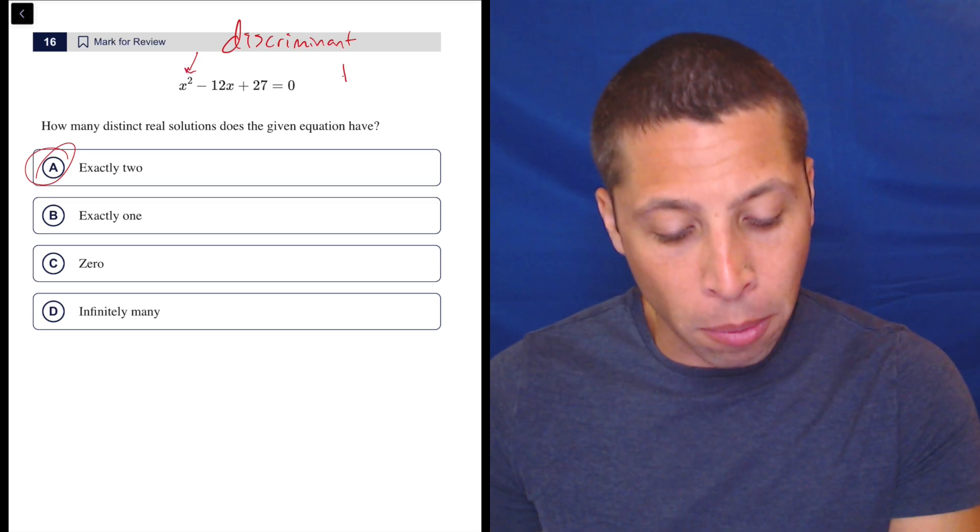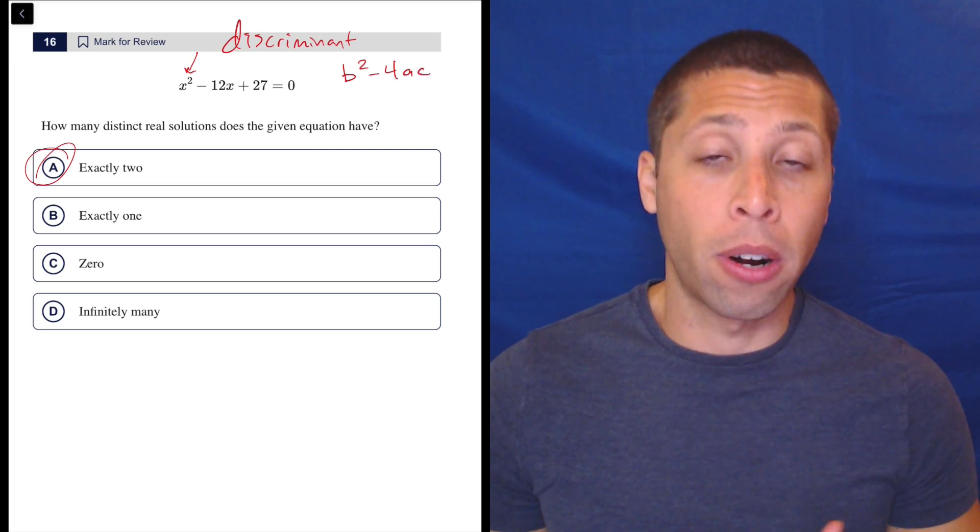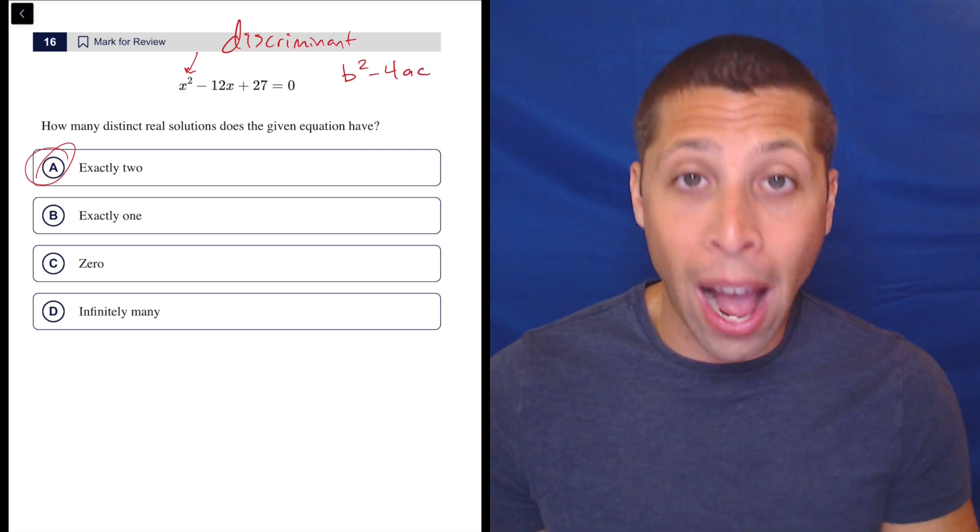which is the formula b squared minus 4ac. That is part of quadratic formula. It is the part underneath the radical.